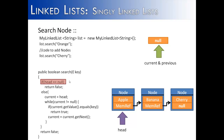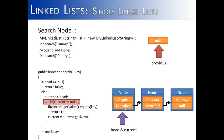First we check to see if the head is null, which would mean the list is empty. Head is not null, it points to the first node, so we go to the else statement. Inside the else statement we set current equal to head, so current is now pointing to the head node. Then we check the while loop condition: current not equal to null. This is true, so we enter the loop and check if current.getValue equals key. Key is cherry, and apple is not cherry, so we do not return true.